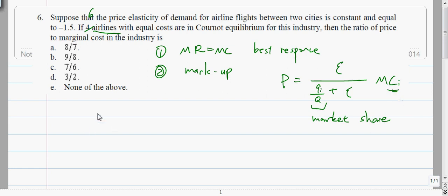And so to use this formula, we have P is equal to epsilon is minus 1.5. This is one over six because there are six firms. So each one shares this much MC.